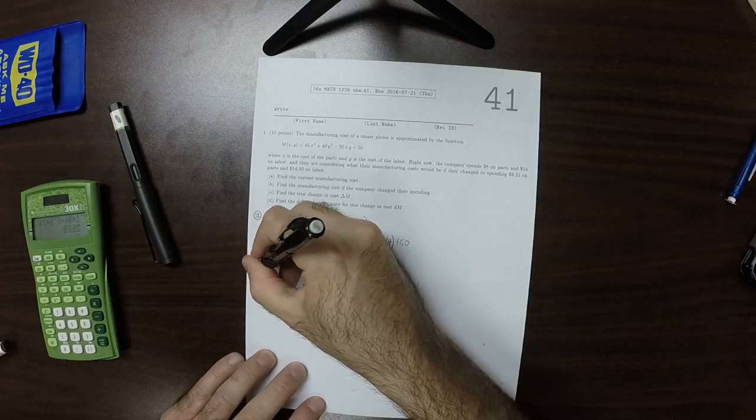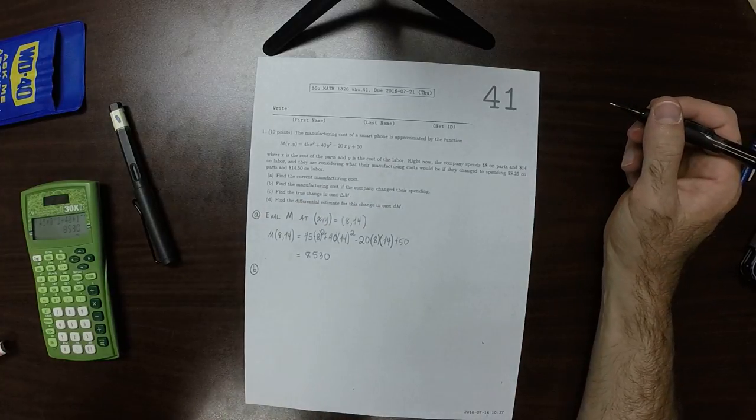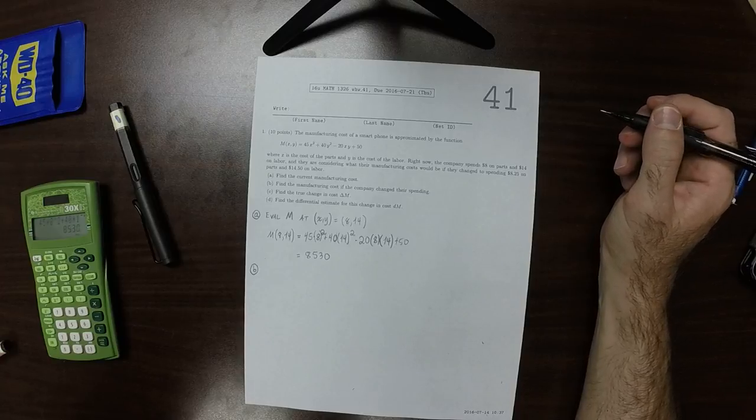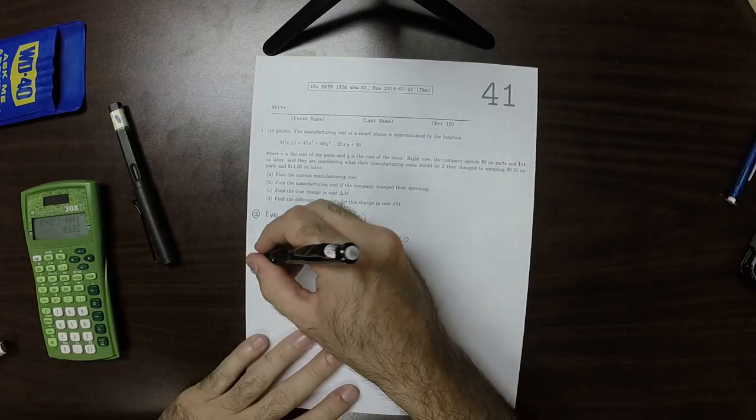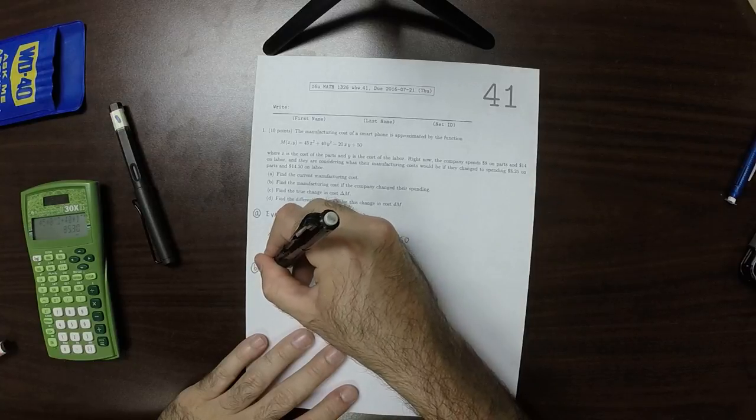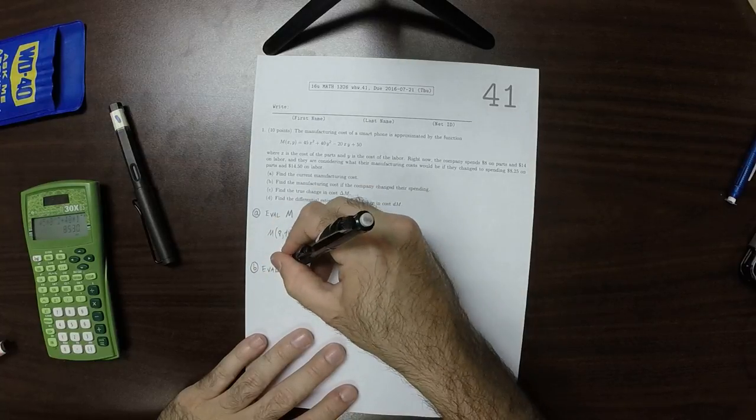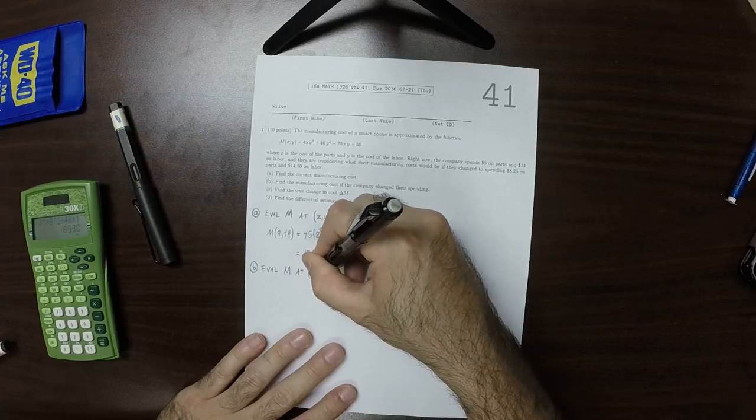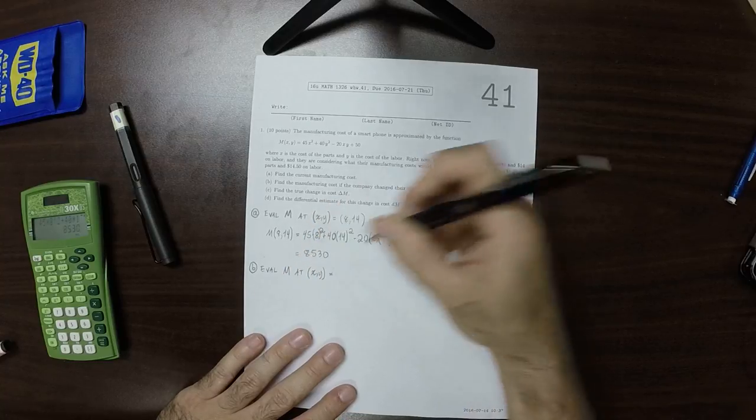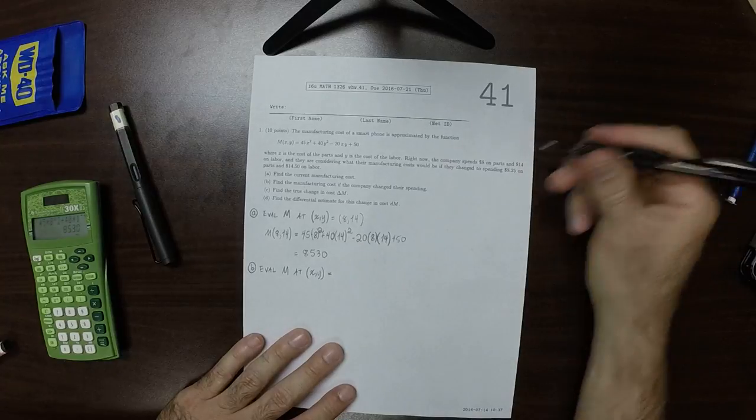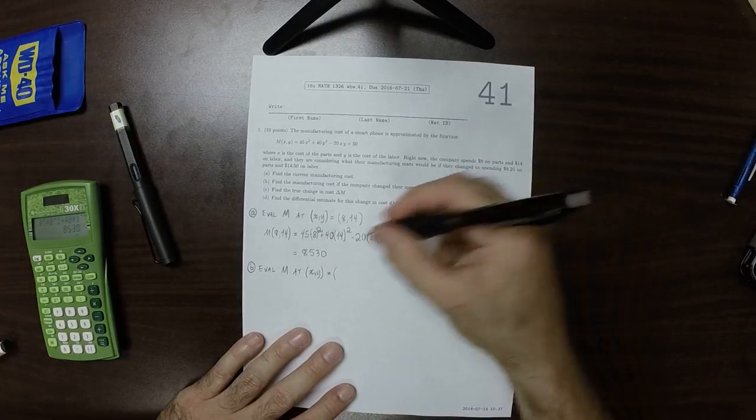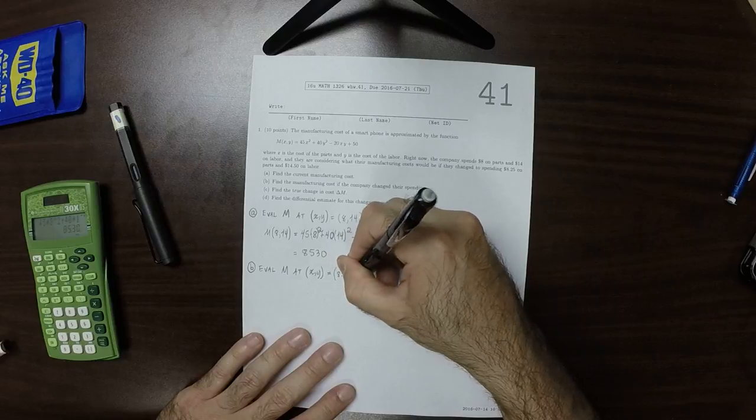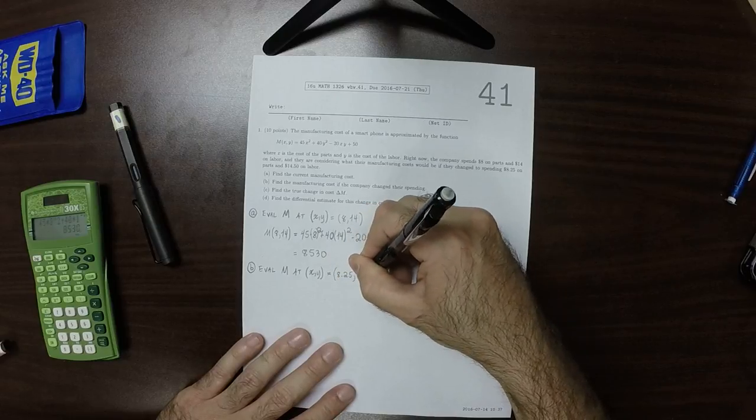Okay, part B. Find the manufacturing cost if the company changed their spending. That is to say, evaluate M at XY is the proposed cost of the pieces. So at 8.25 and 14.5.